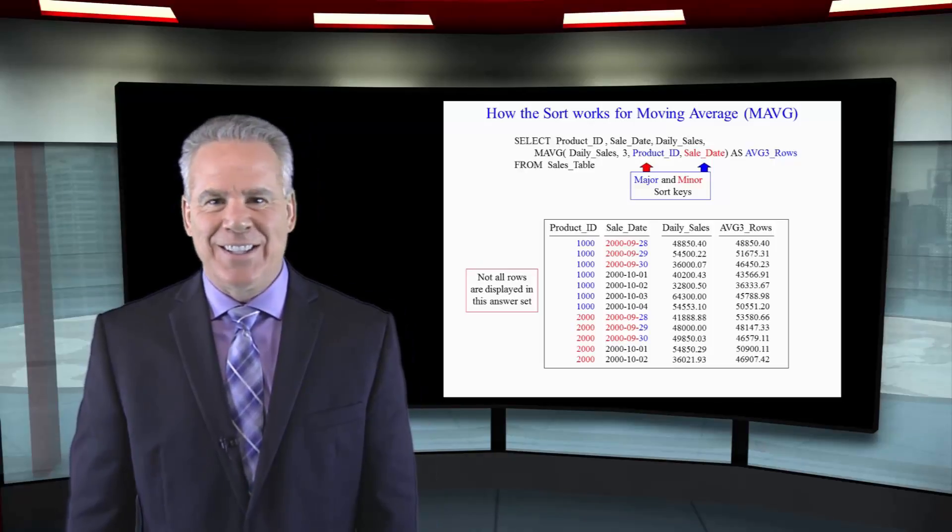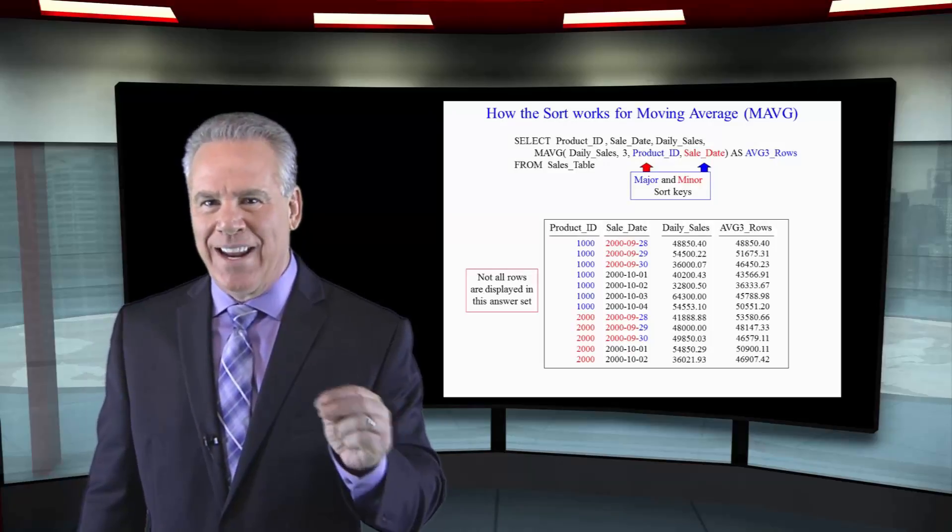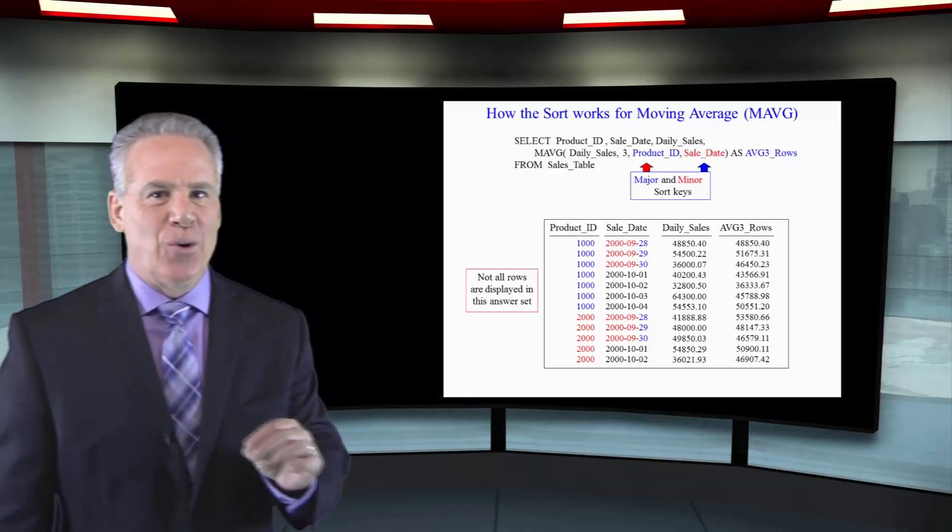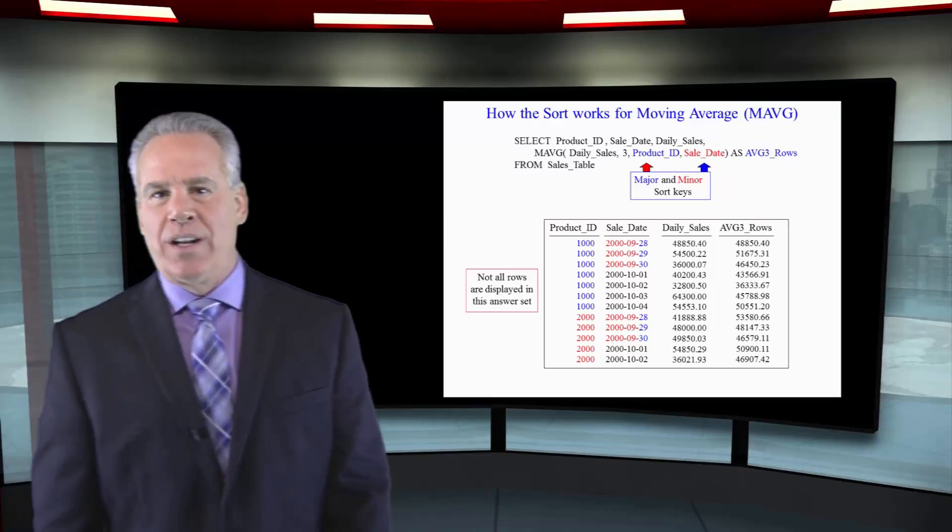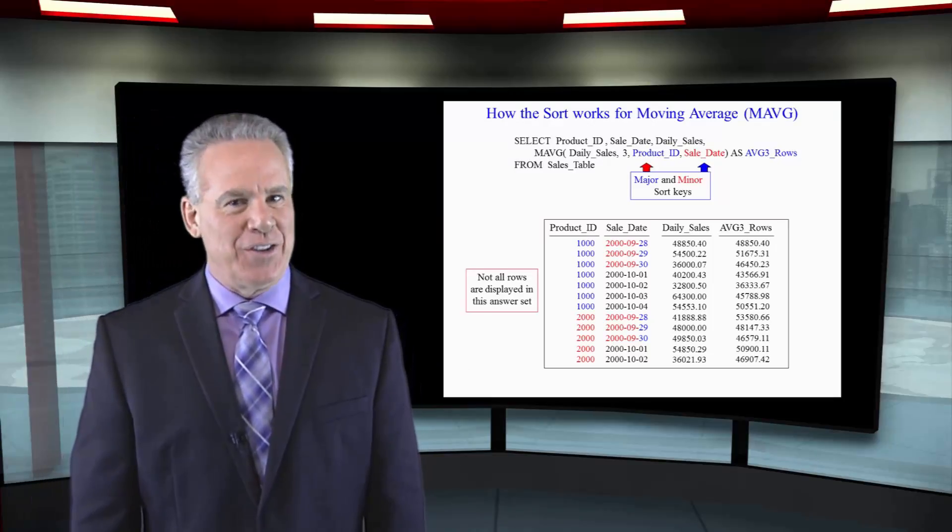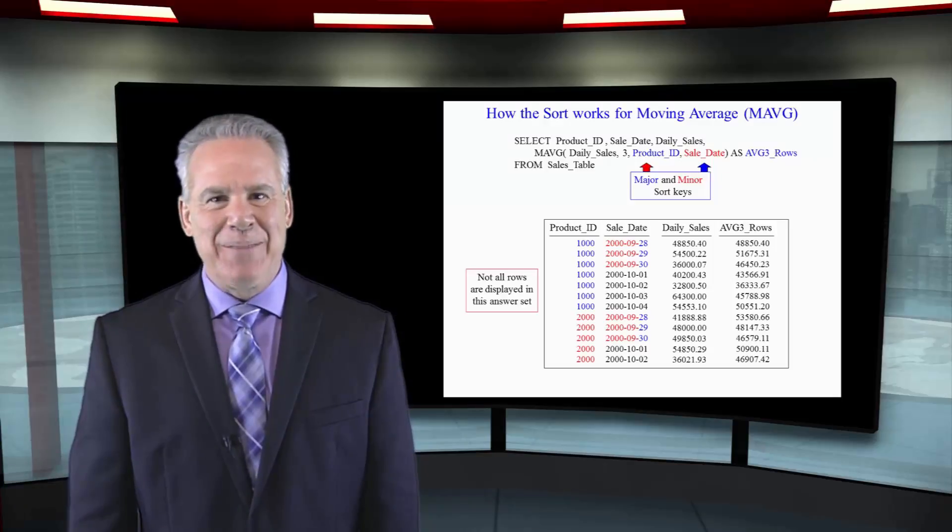One thing is consistent with every ordered analytic. It's going to sort. We've got a multi-column sort with a major minor sort key on product ID first. Then it's going to be sale date and then it's time to calculate.